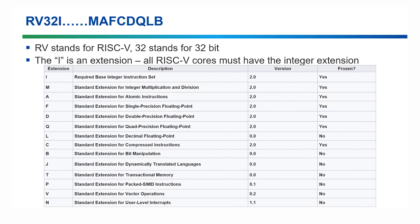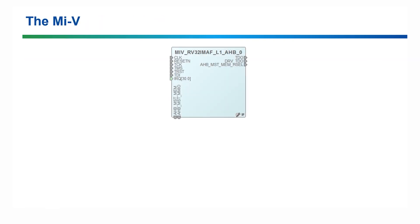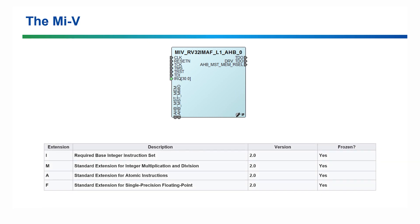If you look at this table, you can see that some of the extensions are frozen — that means they can't change and your code is guaranteed to run on a RISC-V CPU. Let's have a look at the MiV RV32-IMAF core. The I is the integer instruction set, M stands for the integer multiplication and division extension, A is for the atomic instructions extension, and F is for the single precision floating point extension. If you ever come across one you don't know, you can simply Google RISC-V extensions and the full table is available online.